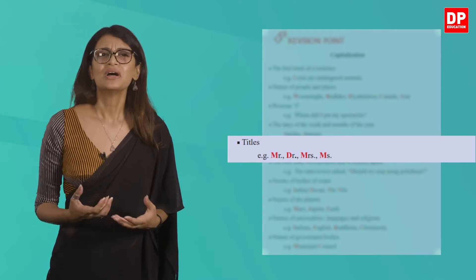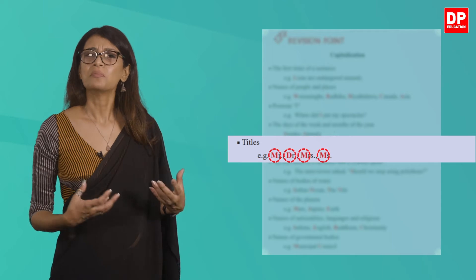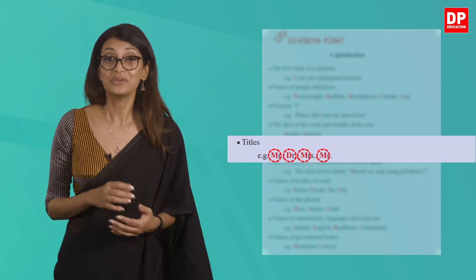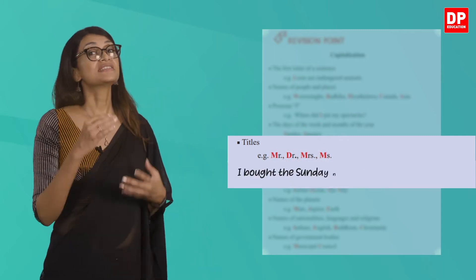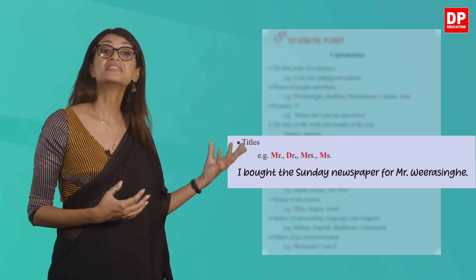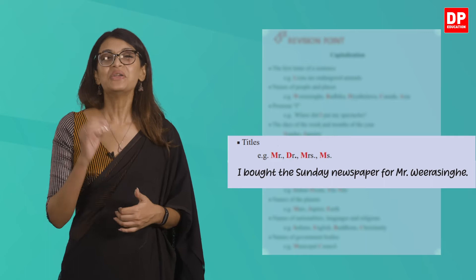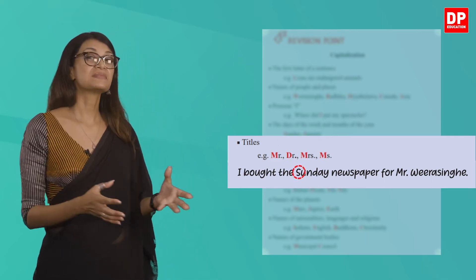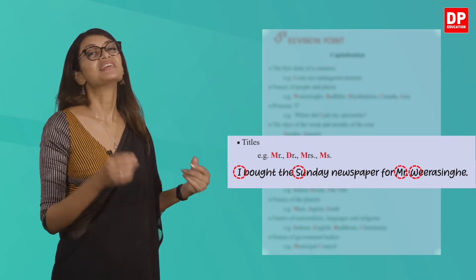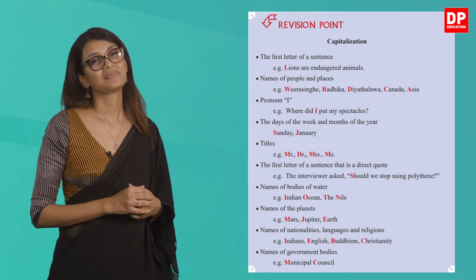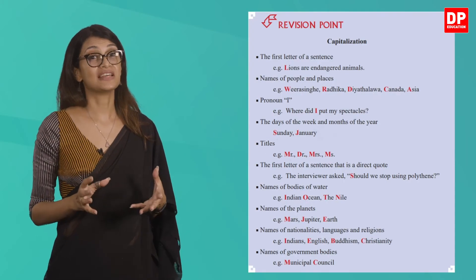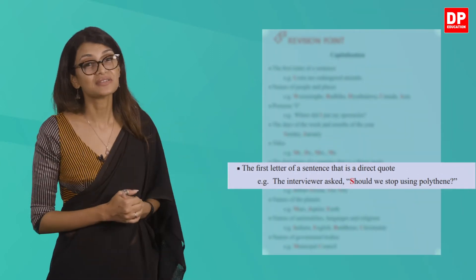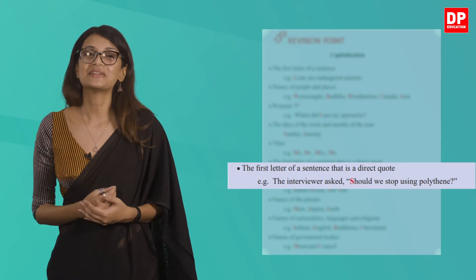You also need to capitalize titles like Mr., Miss, or Ms. before a name. For example: 'I bought the Sunday newspaper for Mr. Veerasingha.' Note how Sunday starts with a capital letter, as does the proper noun Veerasingha, and the title Mister. You will also need to capitalize the first word of a direct quote. Look at the example: 'The interviewer asked, Should we stop using polythene?' The quote begins with a capital letter.